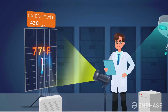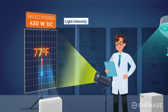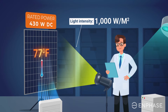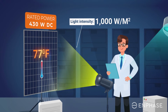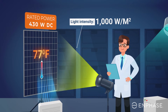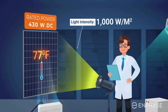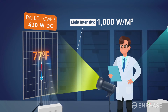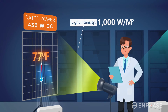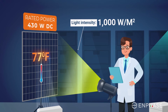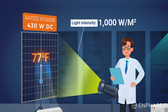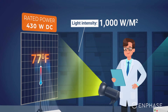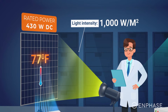It's important to understand that the DC rated power of a solar panel does not reflect the power it will produce in real-world conditions. A solar panel's DC rated power is determined in a favorable and highly controlled laboratory setting, known as standard test conditions, which consists of an intense flash of light on an artificially cooled solar panel.